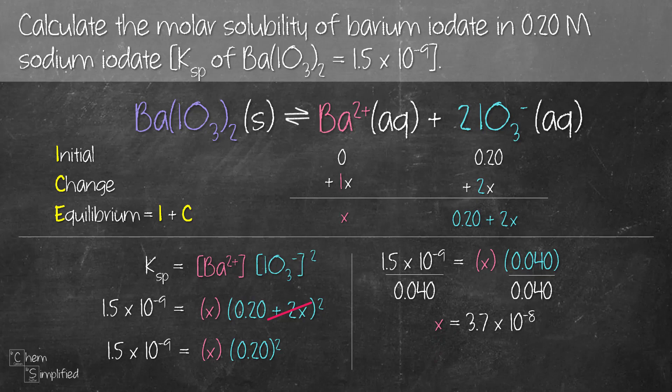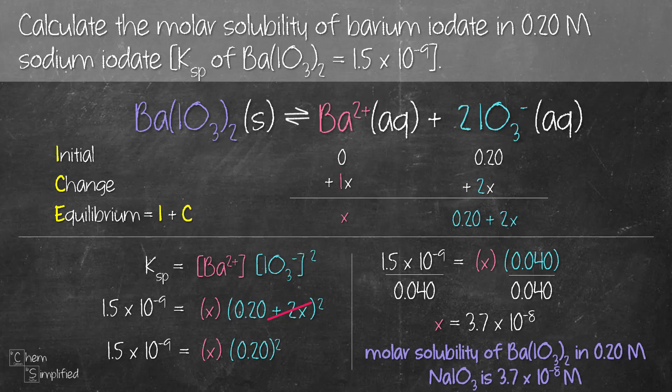Remember, 1 mole of barium iodate gives us 1 mole of barium ion, which is x. Since we've calculated x, the molar solubility of barium iodate in 0.20 molar of sodium iodate is 3.7 × 10⁻⁸ molar. Don't forget the unit — molar solubility uses molarity, which is M or moles per liter.